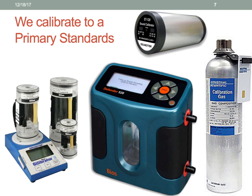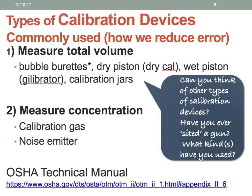So we calibrate to a primary standard. Here are some examples of primary standards: we have a piston calibrator or a dry cal, we have a gilibrator that is also called a bubble calibrator, then we have electrical devices such as our sound level meters, and then we have calibration gases. We calibrate to a primary standard to set and verify the rate at which the pump will pull air. You can check the OSHA technical manual link, which describes proper calibration techniques that we will use in this class.